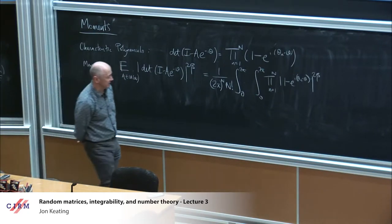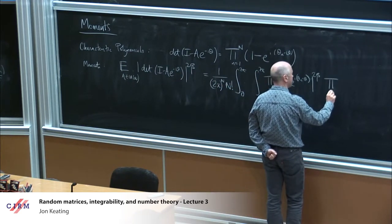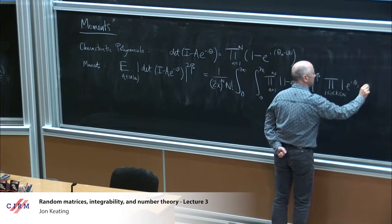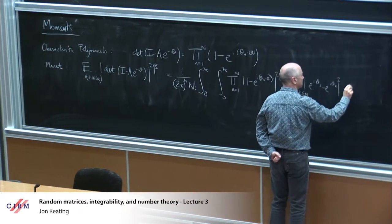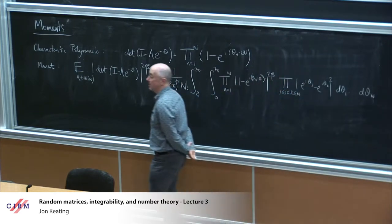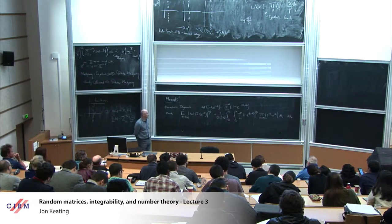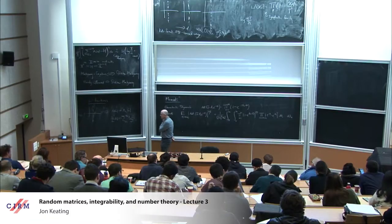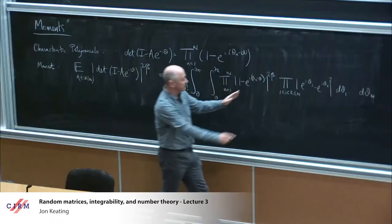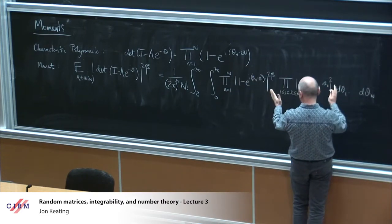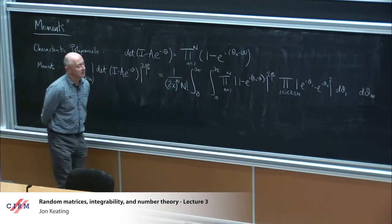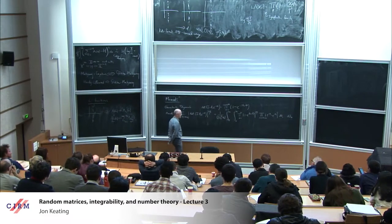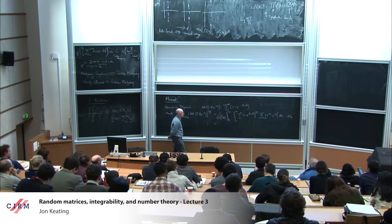That's a formula for the moments as an N-fold multiple integral with a very explicit integrand. If you write this as a Vandermonde determinant, you can analyze the problem that way, and for large N asymptotics this becomes exactly the sort of problem that Alexander and Estelle have been considering. There is a different approach, which Alexander mentioned, which is to use the Selberg integral.